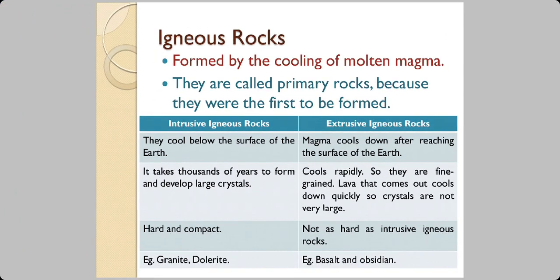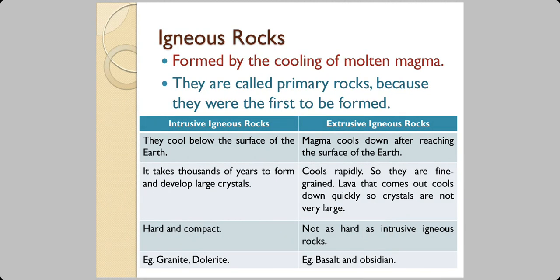Igneous rock can be of two types. They can be intrusive or extrusive. The difference is, if the magma cools down below the surface of the earth, it is known as intrusive rock. But if the magma cools down after reaching the surface of the earth or after coming out from the crust, it is known as extrusive igneous rock. It takes thousands of years for formation of large crystals of rocks in intrusive igneous. In extrusive igneous, they cool rapidly because they reach the atmosphere and it is much colder there. So, they are fine-grained. Lava that comes out cools down quickly. So, crystals are not very large.